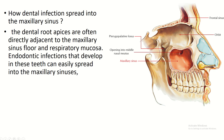How do dental infections spread into the maxillary sinus? The floor of the maxillary sinus is very close to the roots of the teeth, so any infection of the root of the teeth can easily spread into the maxillary sinus.